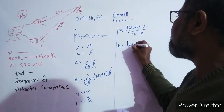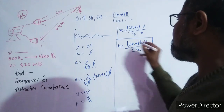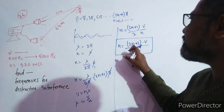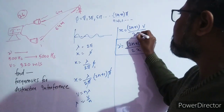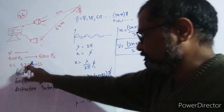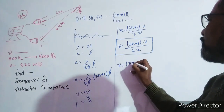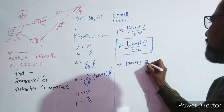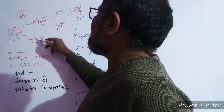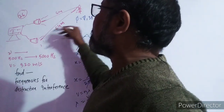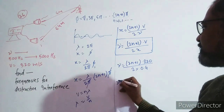तो frequency होगी: f = (2n+1) × v / (2x)। यहाँ पर destructive interference मिलेगा। v की value 320 m/s है, और path difference x = 6.4 - 6 = 0.4 meter है। So frequency = (2n+1) × 320 / (2 × 0.4)।